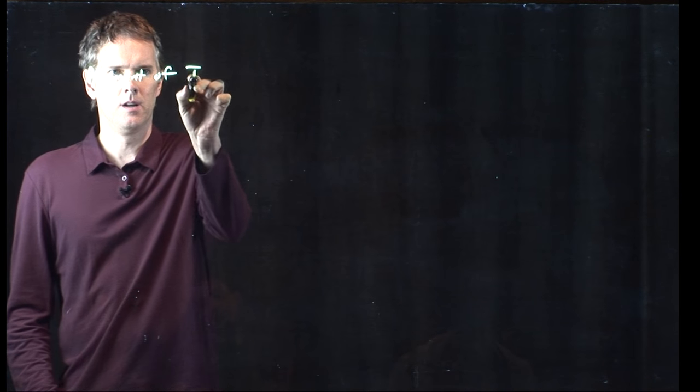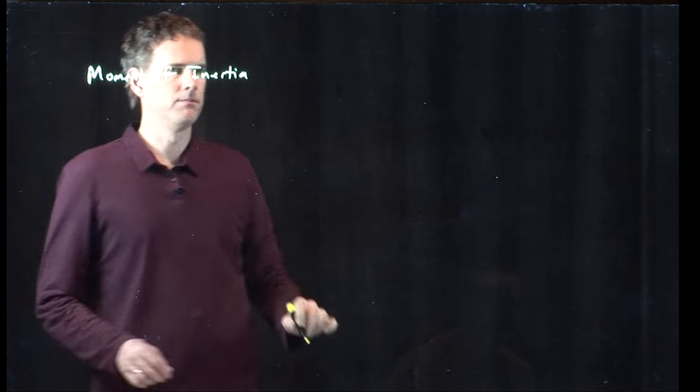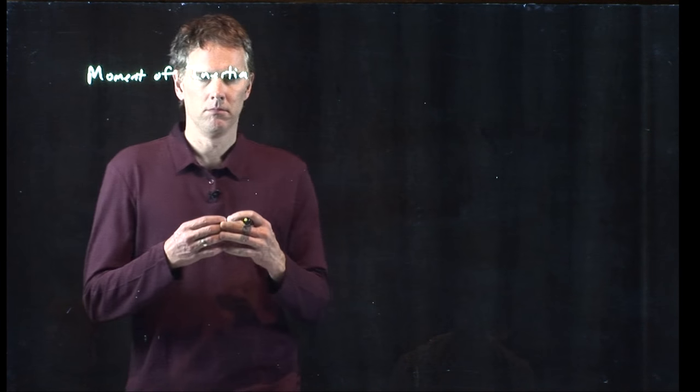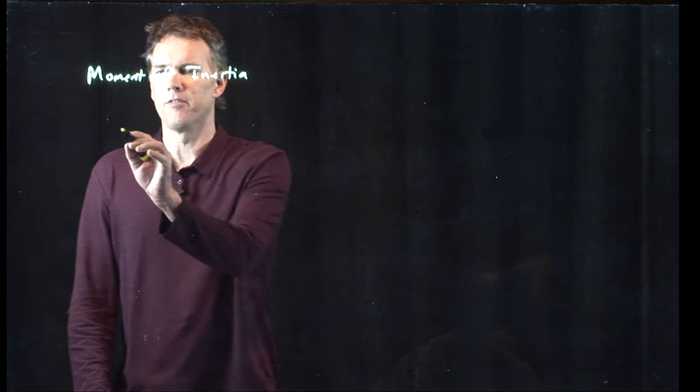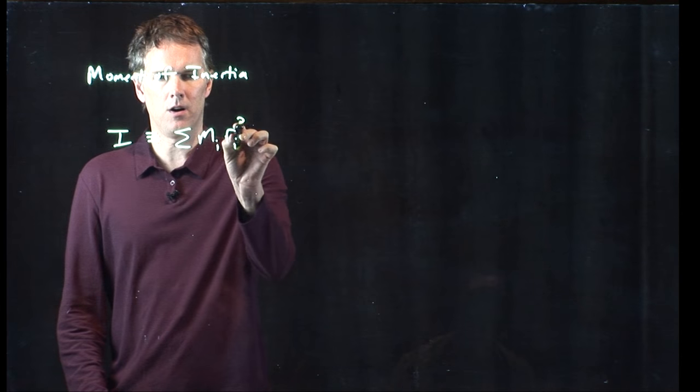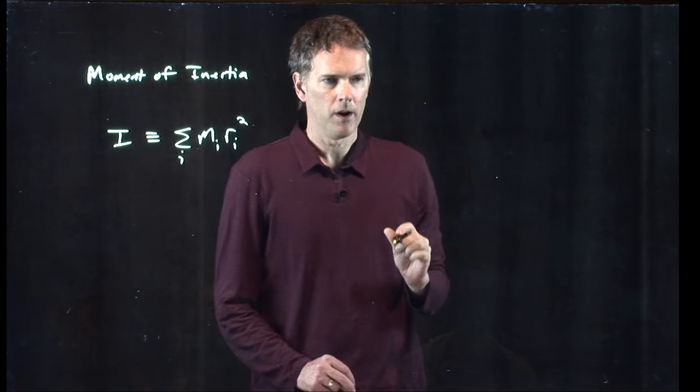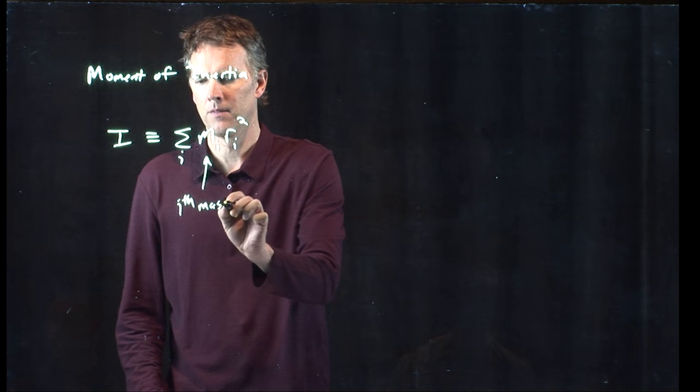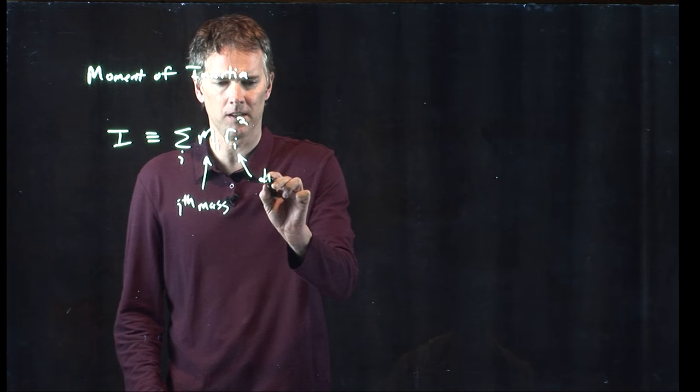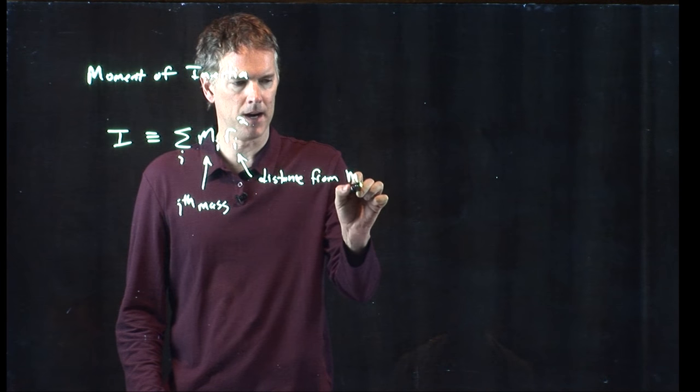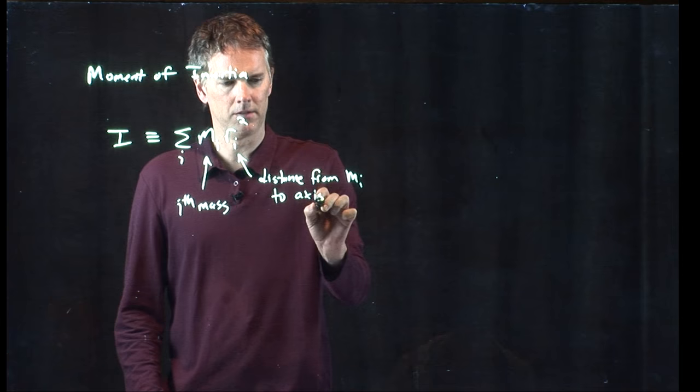All right, so we keep talking about this idea of moment of inertia, but we need to explain a little bit about how to, in fact, calculate that. Moment of inertia for a system of individual particles is defined as this, the summation of m sub i r sub i squared, where m sub i is the i-th mass and r sub i is the distance from m sub i to the axis of rotation.